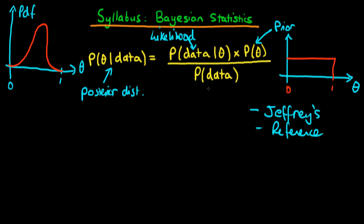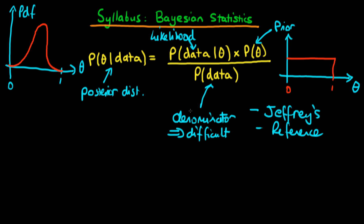The final part of the Bayesian formula is what I just call the denominator. It looks perhaps like it's the most simple term on the right-hand side, when in fact it normally turns out to be the most difficult. The reason it's the most difficult is that essentially what we need to do is work out the probability we would have obtained that data over all choices of theta, because we don't know exactly what the value of theta is. Because of that, we end up having to do a relatively complicated integral, which becomes more and more complicated the higher the number of parameters in our model.